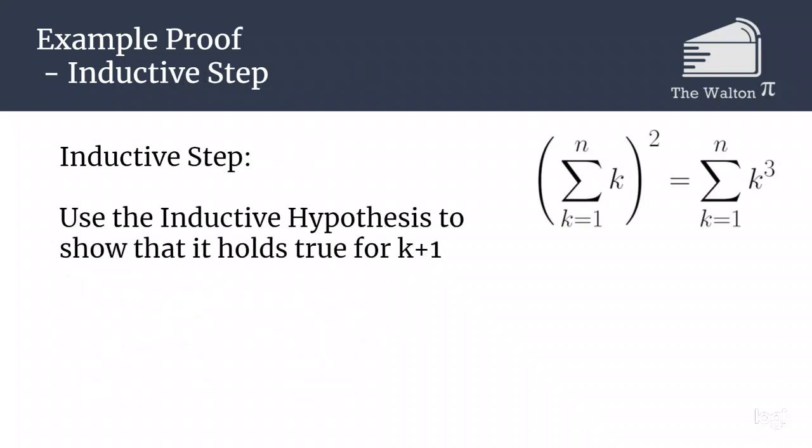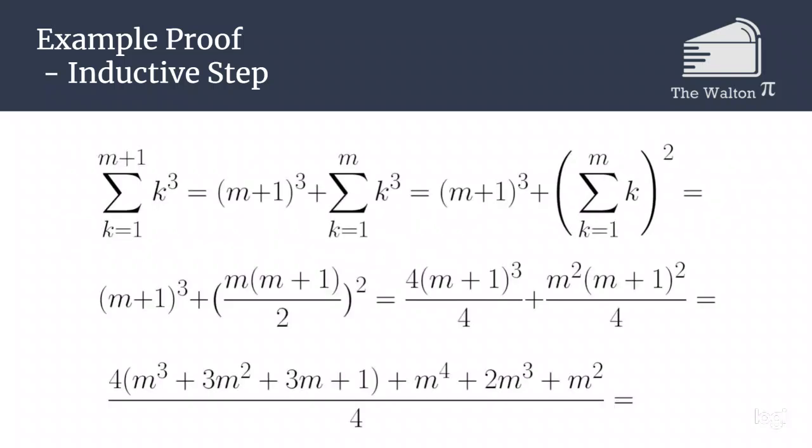We will then use this in our inductive step to show that it will also hold true for m plus 1. So the sum from k equals 1 to m plus 1 of k cubed, we can pull out our m plus 1 term so we get m plus 1 cubed plus the sum from k equals 1 to m of k cubed.